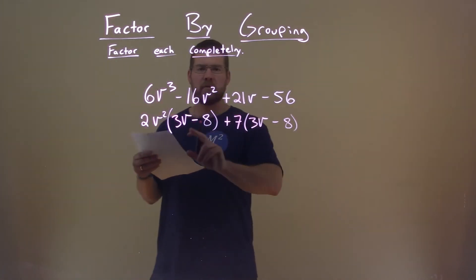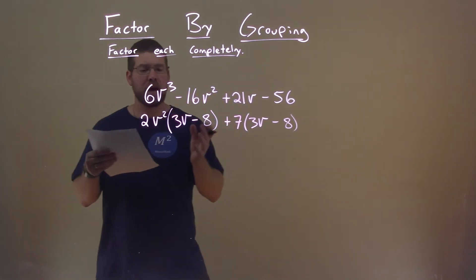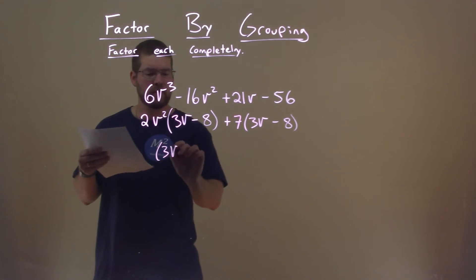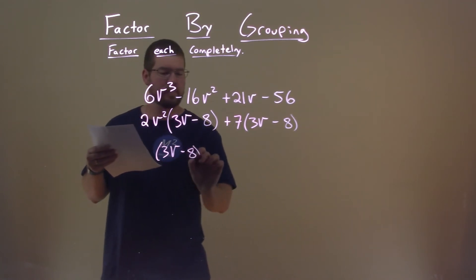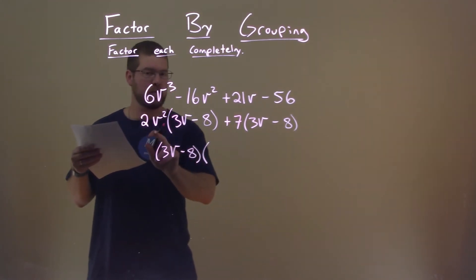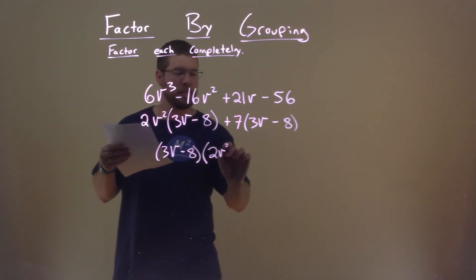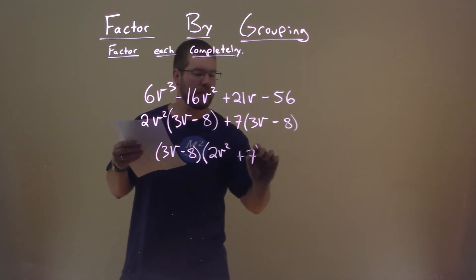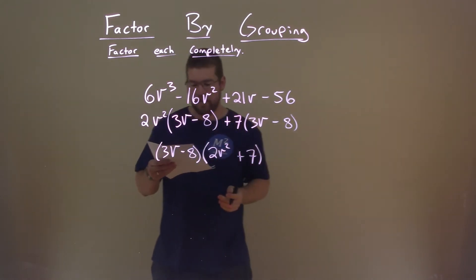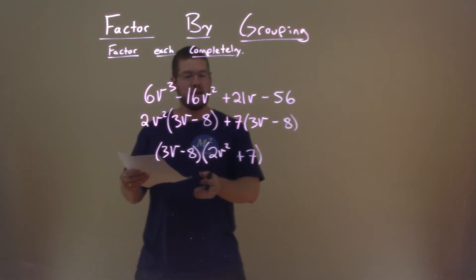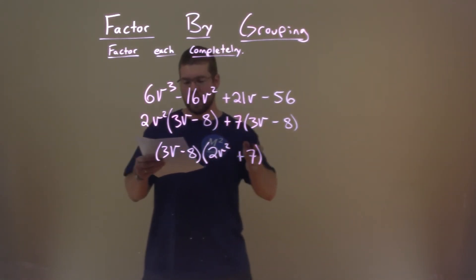We see a 3v - 8 in both parts right here. So if we pull that out from both parts, we're left with (3v - 8) multiplied by what's left: 2v² + 7. And now we actually have our final answer: (3v - 8)(2v² + 7).